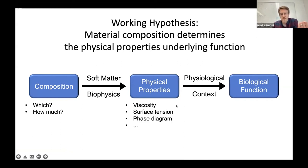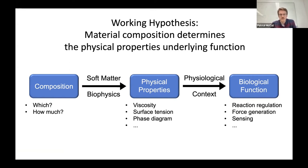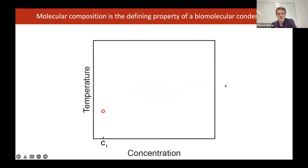Physical properties include many examples that could be relevant — viscosity, interfacial tension, and the overall shape of the phase diagram. The types of biological function cells could use these for include regulation of reactions, generation of force, and sensing of the environment. To think about composition more concretely, we should imagine a phase diagram.